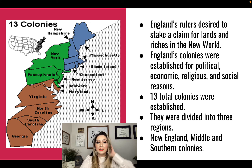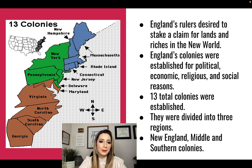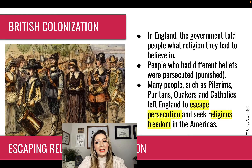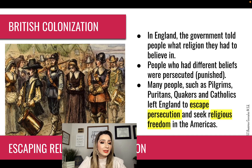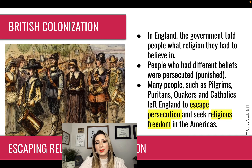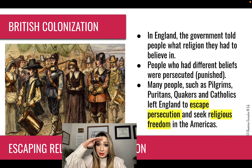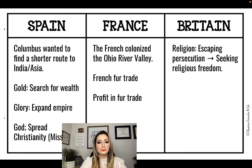13 total colonies were established, divided into three regions: the New England colonies shown in blue, the middle colonies shown in green, and the southern colonies shown in brown. In England, the government told people what religion they had to believe in, and people who had different beliefs were persecuted, which means punished. Many people such as Pilgrims, Puritans, Quakers, and Catholics left England to escape persecution and to seek religious freedom in the Americas. Make sure we know that for religion, the main reason was escaping persecution and seeking religious freedom.